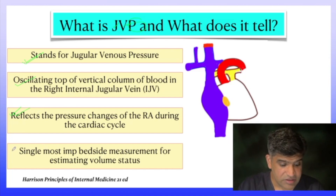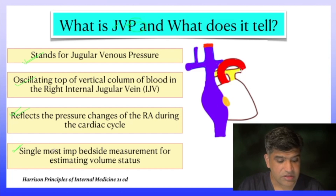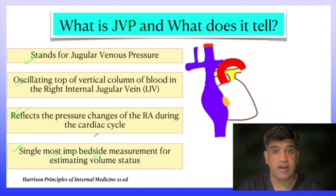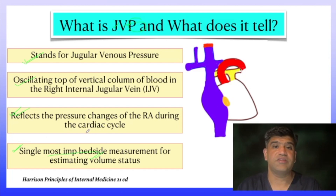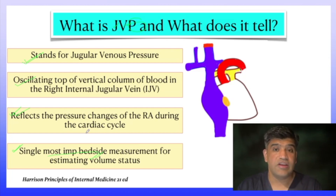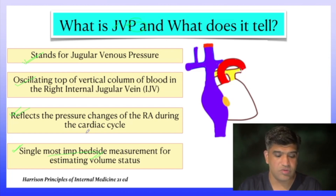Harrison's states that it is the single most important bedside measurement for estimating the volume status of a patient. So if you want to assess whether the patient is dehydrated or fluid overloaded, jugular venous pressure bedside evaluation is the single most important bedside measurement.